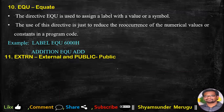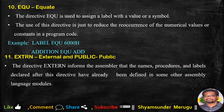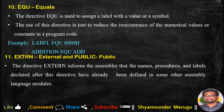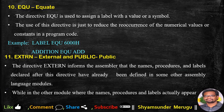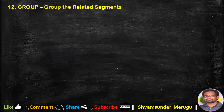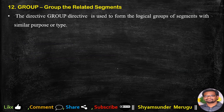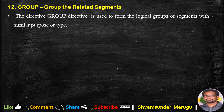The EXTERN directive informs the assembler that the names, procedures, and labels declared after it have already been defined in some other assembly language modules. In those other modules where the names, procedures, and labels actually appear, they must be declared with the PUBLIC directive. The GROUP directive is used to form logical groups of segments with a similar purpose or type.